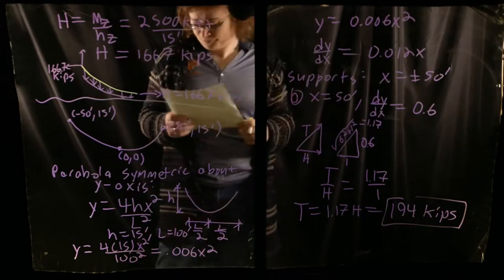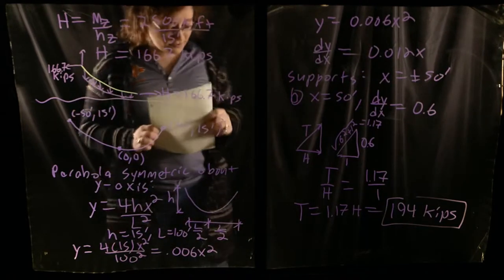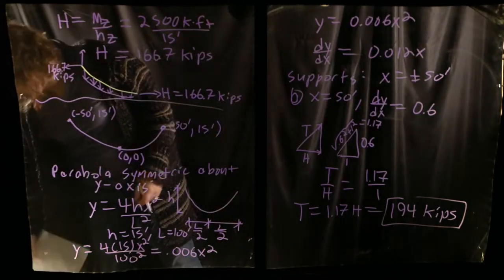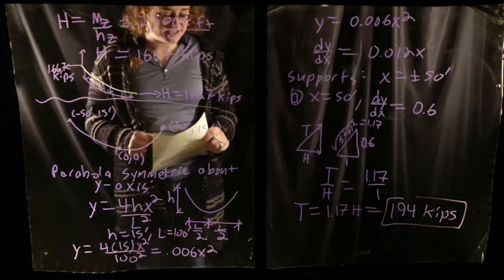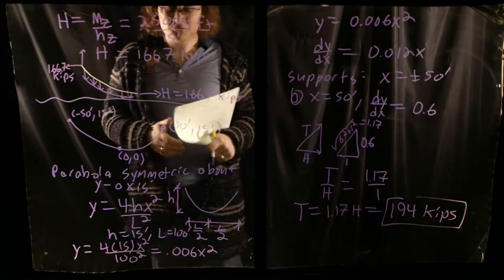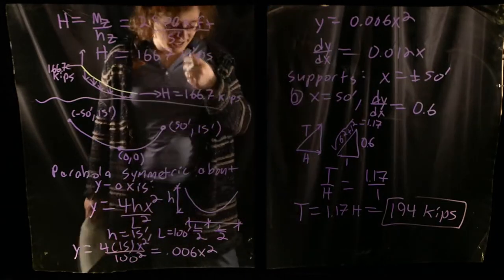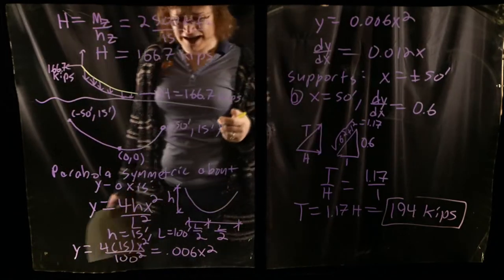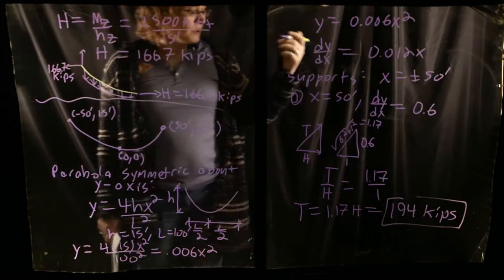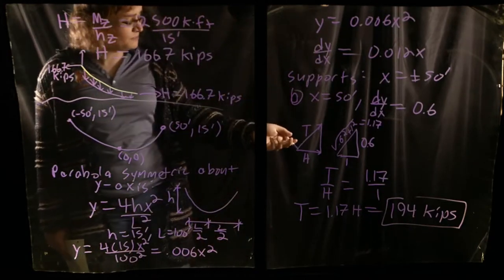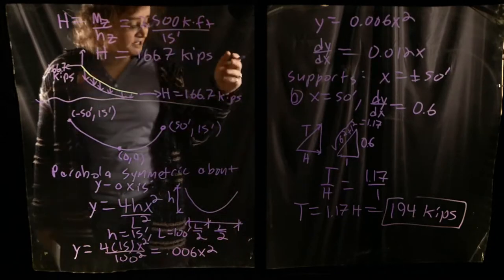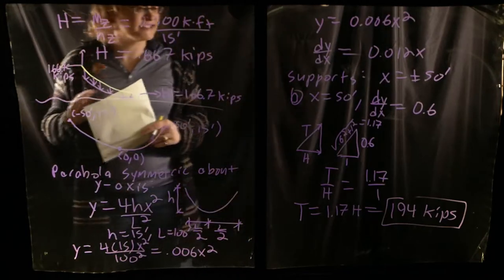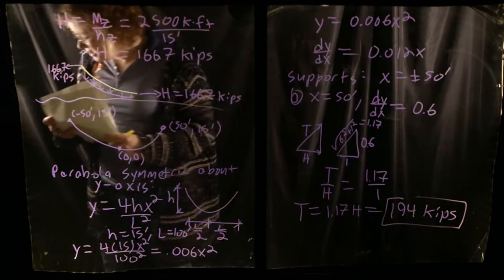To summarize the solution: we found the equivalent simply supported beam moment, then used the mid-span cable drape to find the horizontal thrust, then determined the location of maximum tension at the supports. We got the slope by taking the derivative of the parabola equation, and used similar triangles to find the tension components. The maximum tensile force in the cable is 194 kips. There are many variations possible — for example, finding what cable drape is needed if the tension cannot exceed a certain limit.